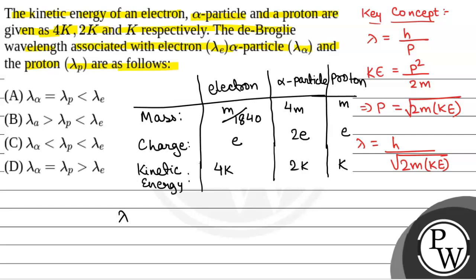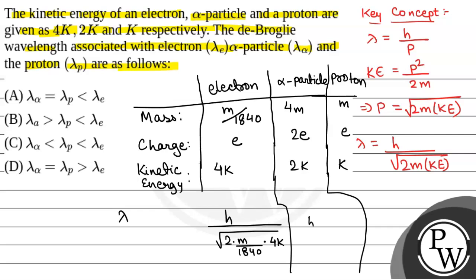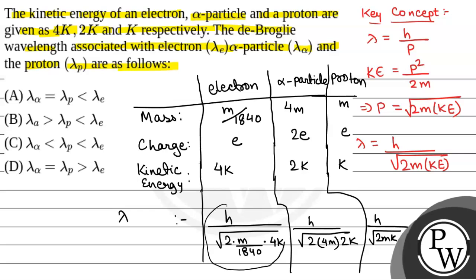The de Broglie wavelength for the electron is H by root under 2 times (m/1840) into 4k. The de Broglie wavelength for the alpha particle is H by root under 2 into 4m into 2k. The de Broglie wavelength for the proton is H by root under 2mk. From here, we can see that the de Broglie wavelength of the electron is greater than that of the proton, and the de Broglie wavelength of the alpha particle is the least.